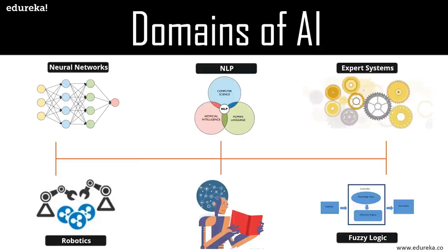Fuzzy logic is a solution to complex problems in all fields of life, including medicine, as it resembles human reasoning and decision making. One of the most important aspects of AI is natural language processing, which refers to the AI method of communicating with intelligent systems using a natural language. By utilizing NLP and its components, one can organize massive chunks of text data, perform numerous automated tasks, and solve problems such as machine translation, named entity recognition, sentiment analysis, speech recognition, and topic segmentation. These domains show just how wide AI is and how it is not confined to just one area of development.